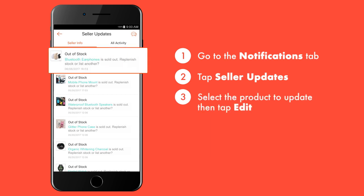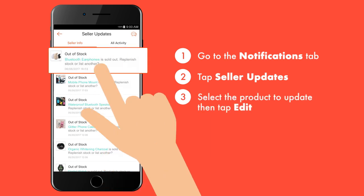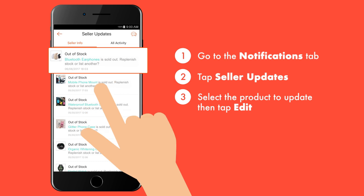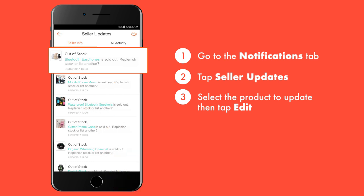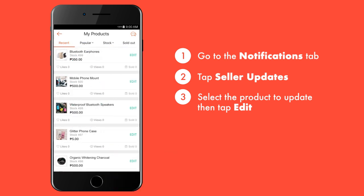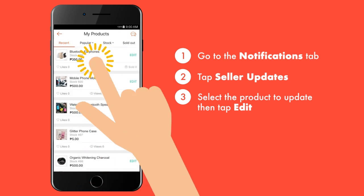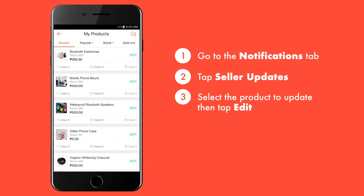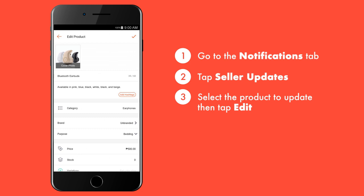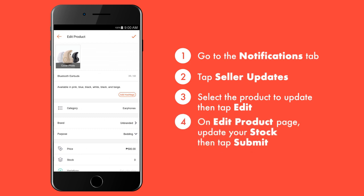Simply update your out-of-stock product directly by tapping Edit. On the Edit Product page, update your stock, then tap Submit.